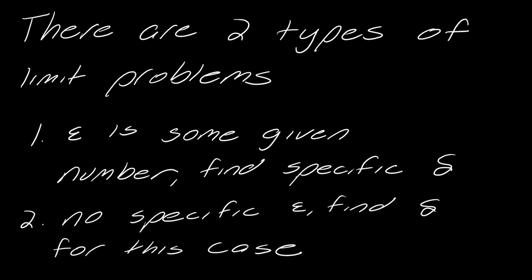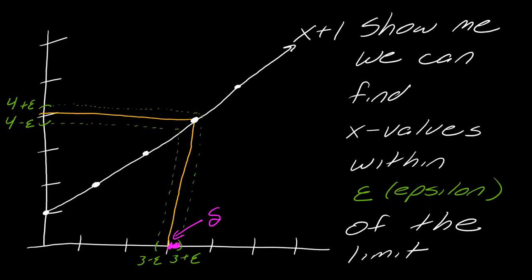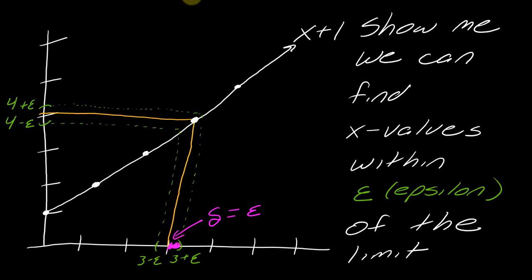The second type of problem is one where you don't have a specific epsilon — it's more of the general case where you're doing everything in terms of formulas. That's where the story ended: you finally said, I'll just come up with a formula for it. We're not looking for the x values; we're looking for how you would describe that delta distance. In this particular example, the delta would actually just be equal to epsilon. So if you get within epsilon around your limit, you just need to be within epsilon around that x value as well, and then you're good to go.